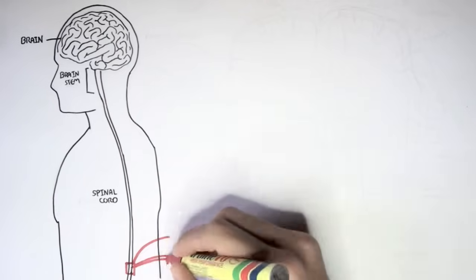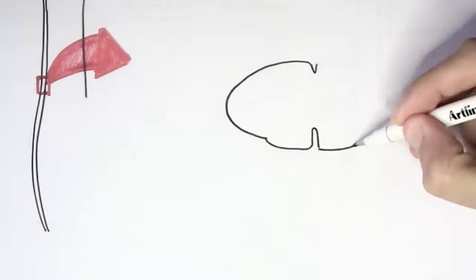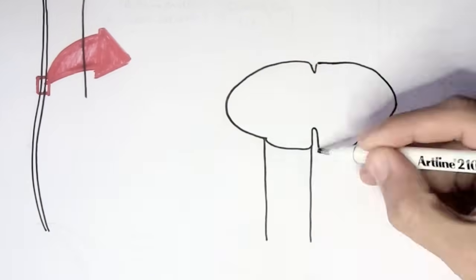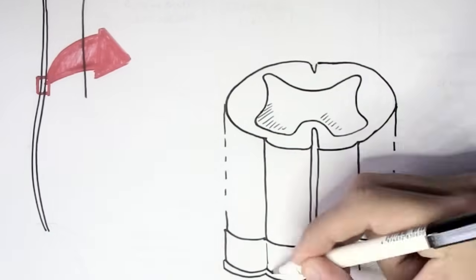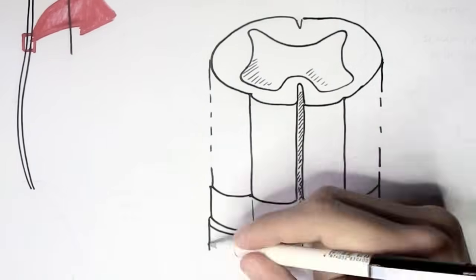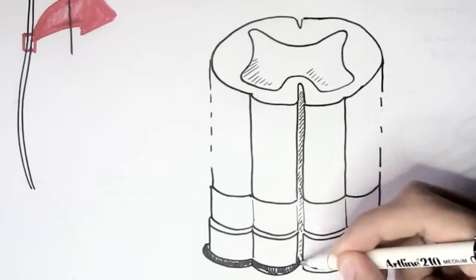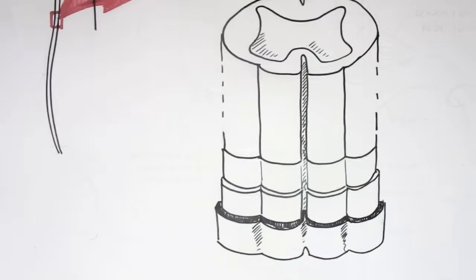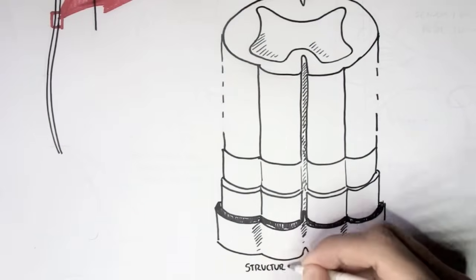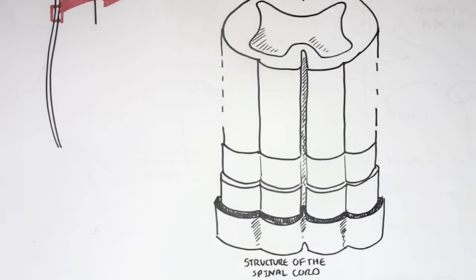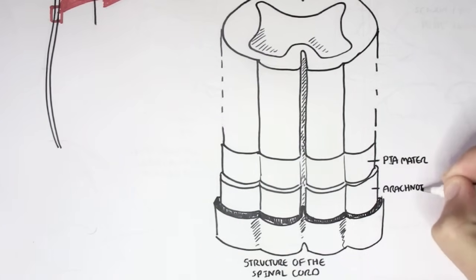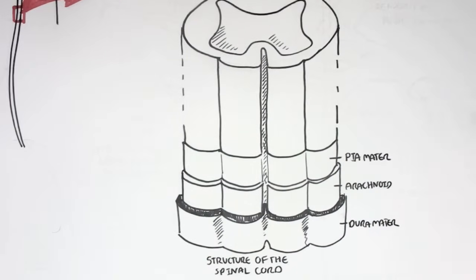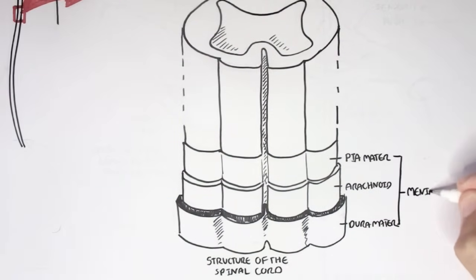Because the spinal cord is like a relay station, where the information about pain, temperature, pressure from the periphery, meaning the skin, the joint and the muscles, can travel up to the brain. So here is a structure of the spinal cord. The barriers of the spinal cord as well as the brain from the inside is the pia mater, arachnoid and dura mater. All these are collectively known as the meninges.